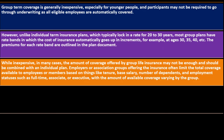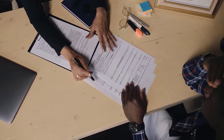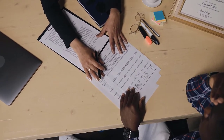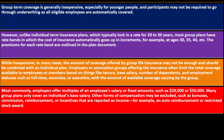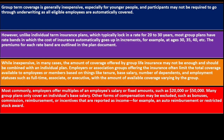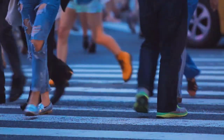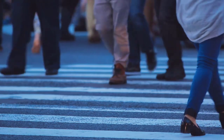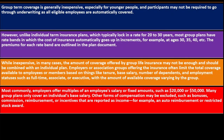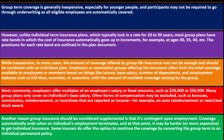Employers most commonly offer multiples of an employee's salary or fixed amounts such as $20,000 or $50,000. Many group plans only cover an individual's base salary; other forms of compensation may be excluded, such as bonuses, commissions, reimbursements, or incentives like an auto reimbursement or restricted stock award. Many people receive a significant year-end bonus, and if that's not included in the annual salary calculation, it won't factor into the insurance benefit. Commissions also add complexity to these calculations.